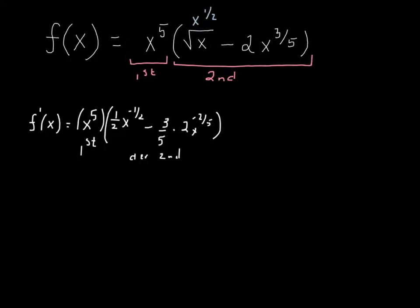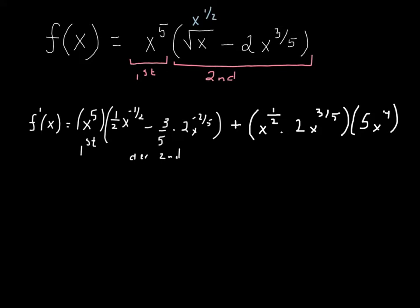We're going to continue by saying plus the second. So I just rewrite my original second: x to the one-half minus 2x to the three-fifths, times the derivative of the first. You may want to pause the video here and go back through to make sure you understand what I've done. But again, the first times the derivative of the second, plus the second times the derivative of the first.